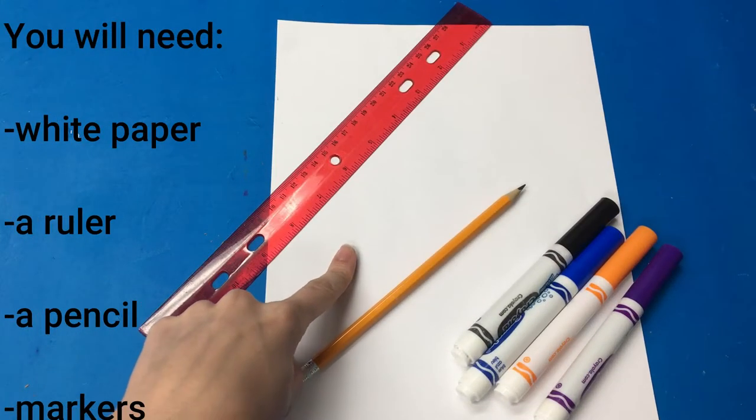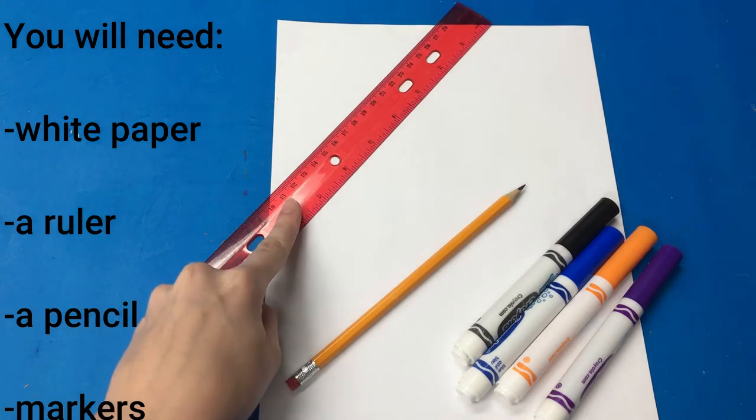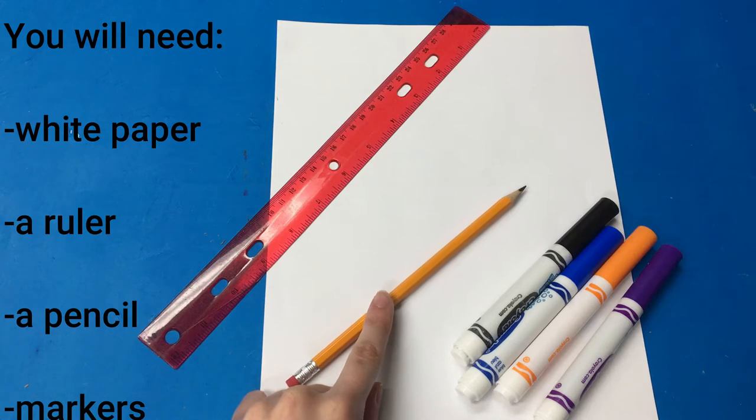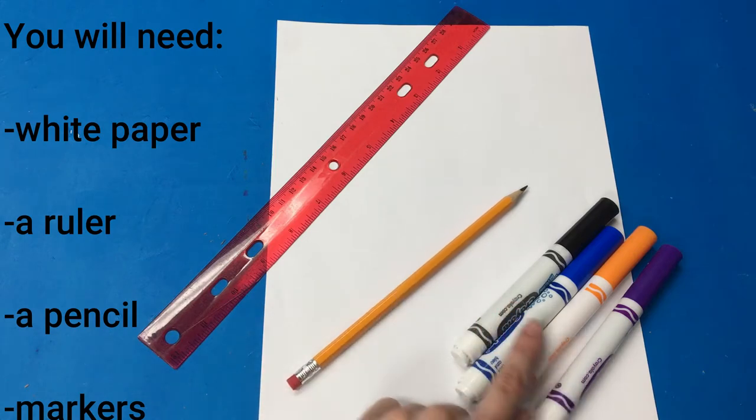To make a 3D hand drawing, take white paper, a ruler or straight edge, a pencil that has an eraser, and some different colored markers.